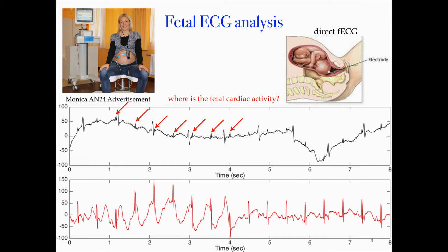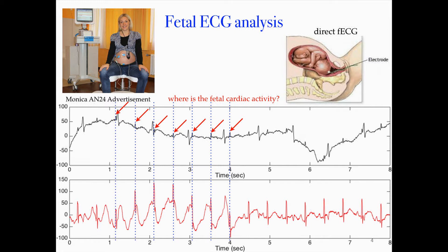This is how the fetal ECG looks like when you record simultaneously from the fetal scalp. Doing a comparison, all those spikes match exactly. So the maternal abdominal ECG signal contains not just maternal ECG but also fetal ECG. The question is: could you decompose these two signals so that we can study the fetal heart health?